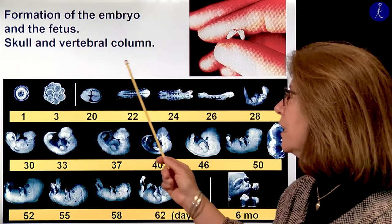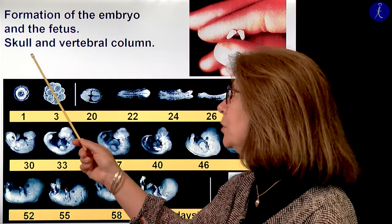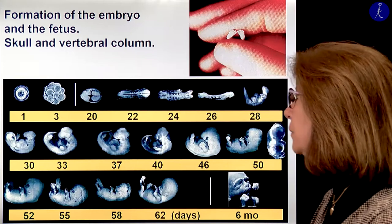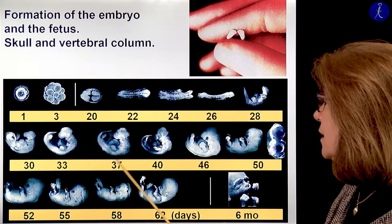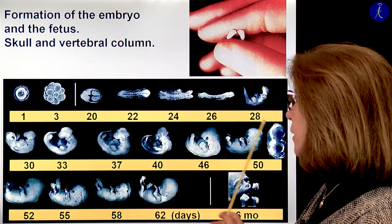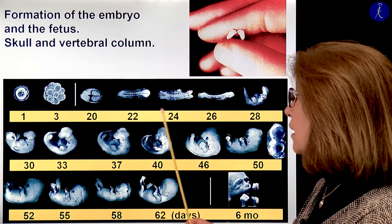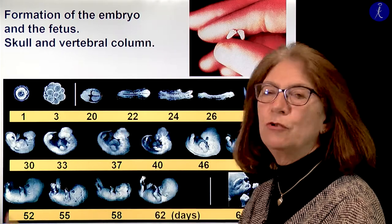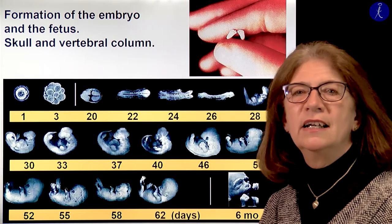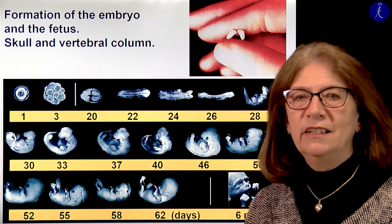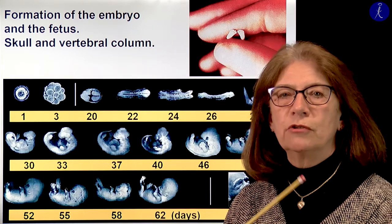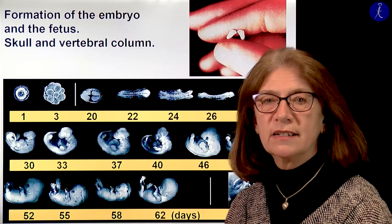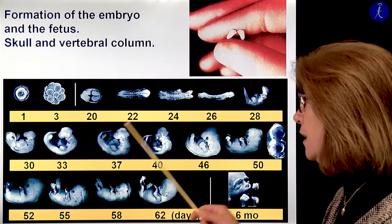In the second half of the lecture I will talk about the skull and the vertebral column. As you see in this series of pictures, in the first three weeks we just have a group of cells, and then a sandwich-like structure first consisting of two layers, later then of three layers.